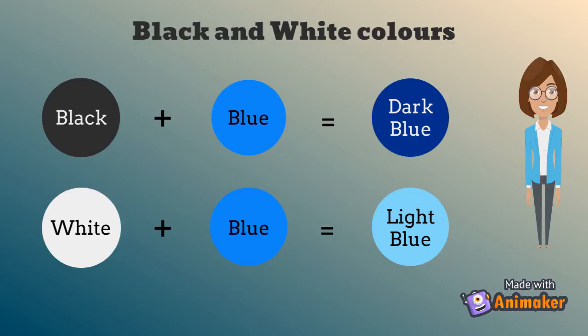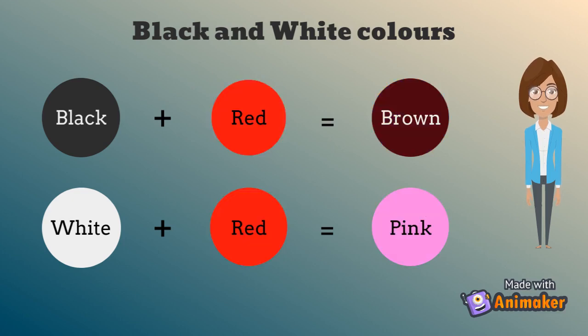Now let us talk about black and white colors. Black and white colors are used either to increase or decrease the shade or tone of any other color. For example, when black color is mixed with blue color, it forms dark blue color. But when white color is mixed with blue color, it forms light blue color.